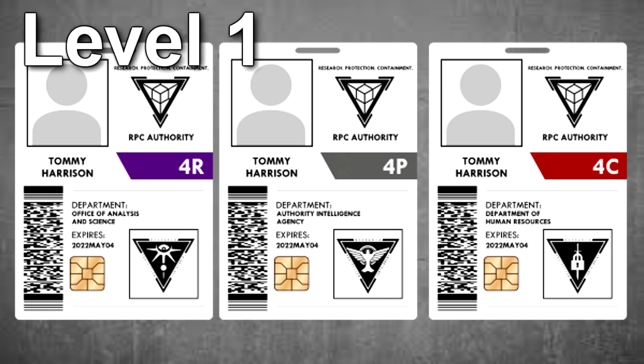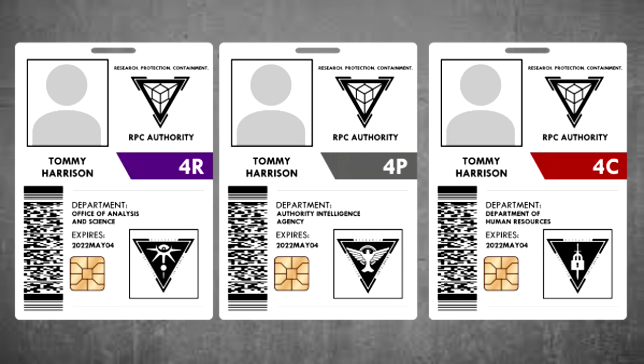Level 1 security clearance designates personnel to operate near to, but not necessarily in direct contact with, RPC objects. Level 1 staff can, with proper authorization, interact with and assist with research and containment on alpha, neutralized, and theta-level anomalies on a case-by-case basis. They are permitted limited informational access to objects of a higher containment rating, as well as access to support facilities needed to maintain containment or security procedures. Personnel with Level 1 clearance are generally newly employed research support staff, or those from other divisions working in janitorial, logistical, or administrative positions.